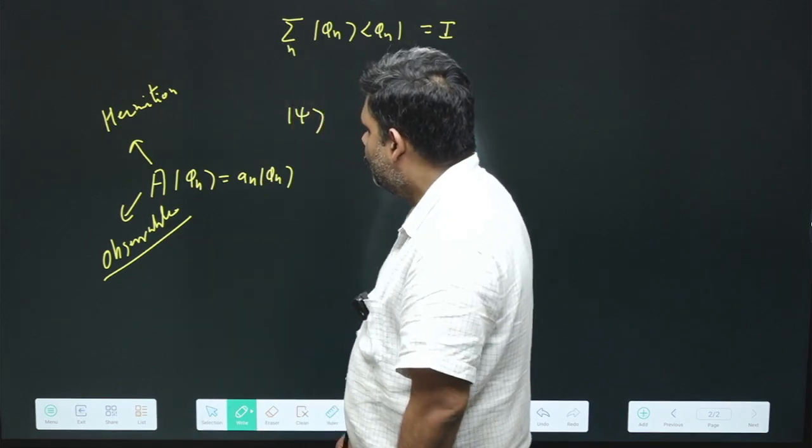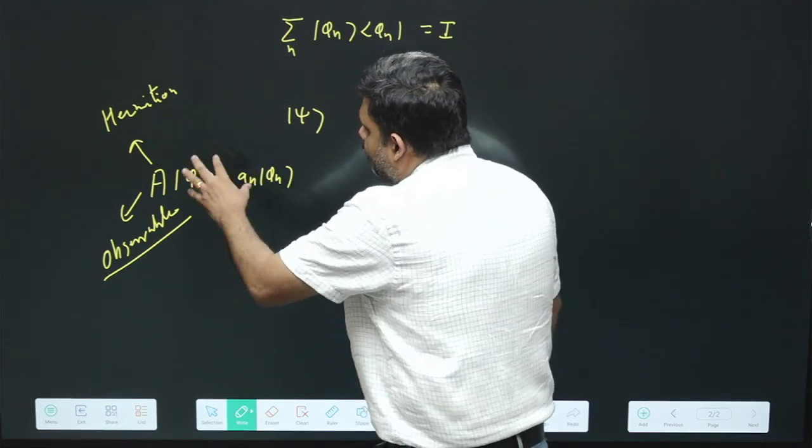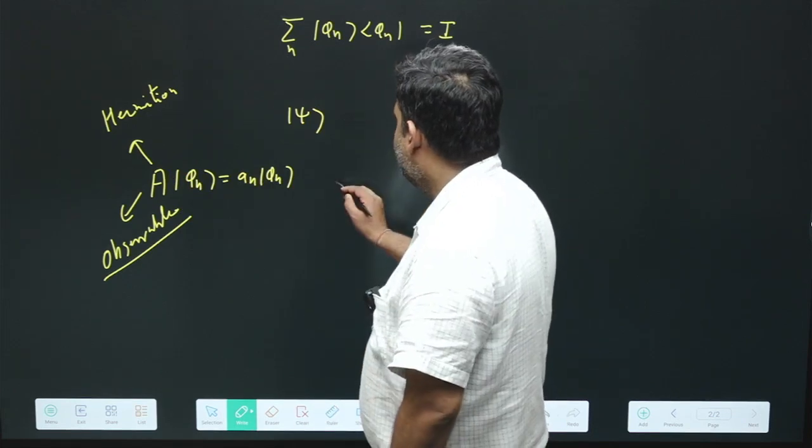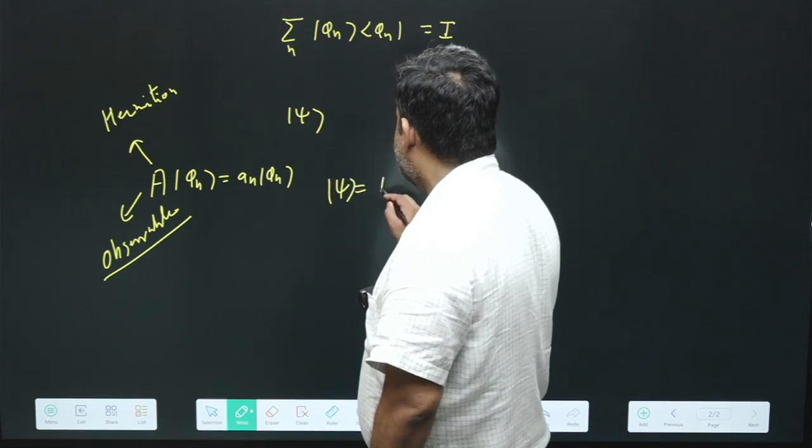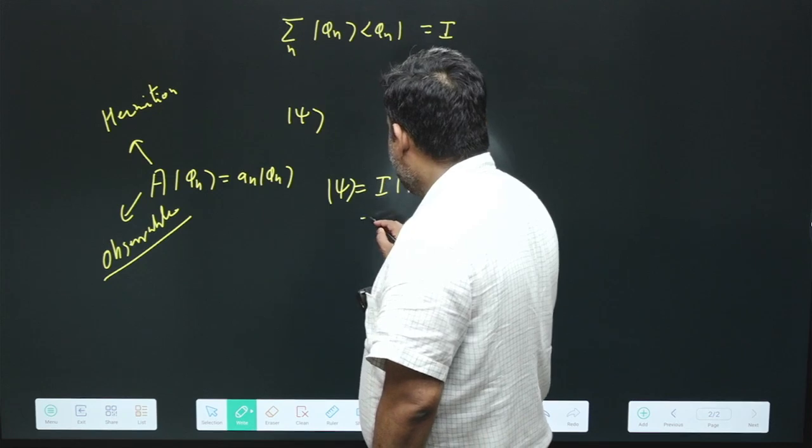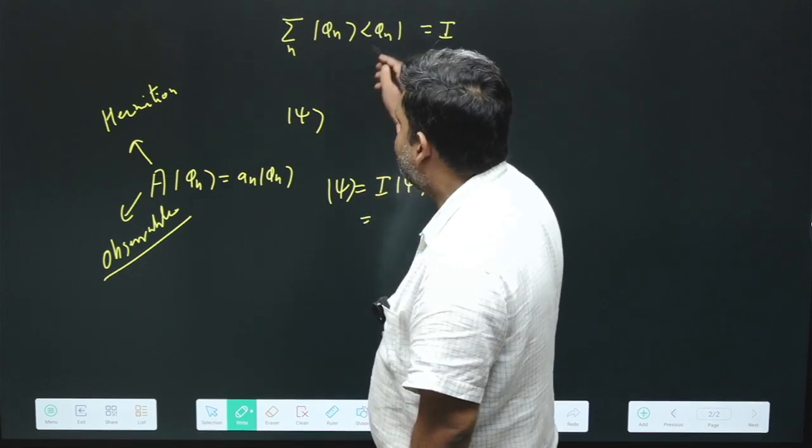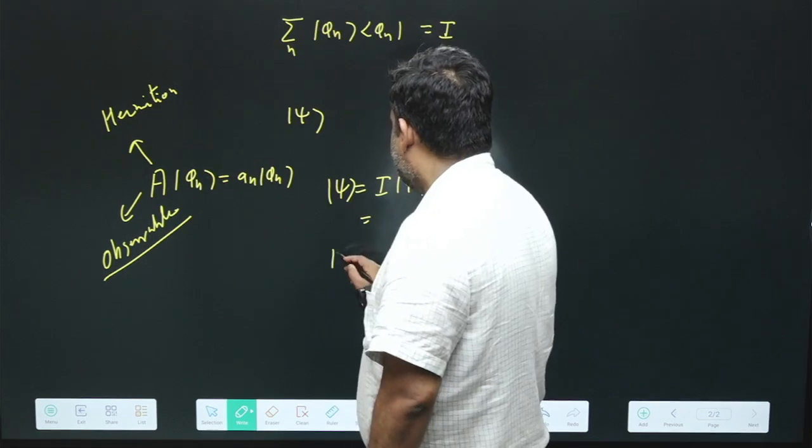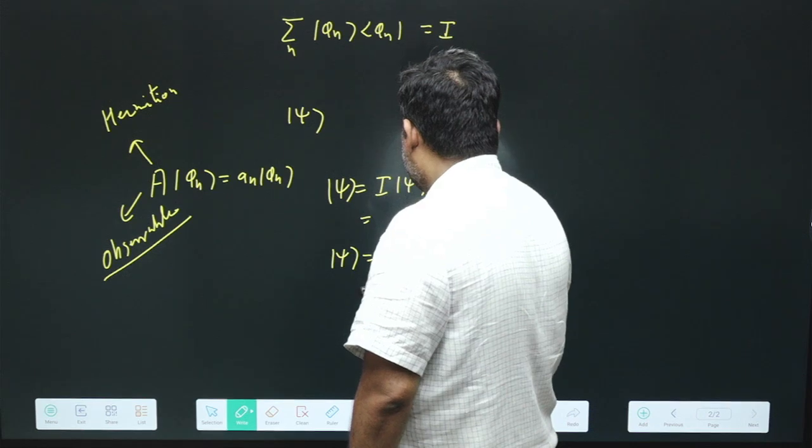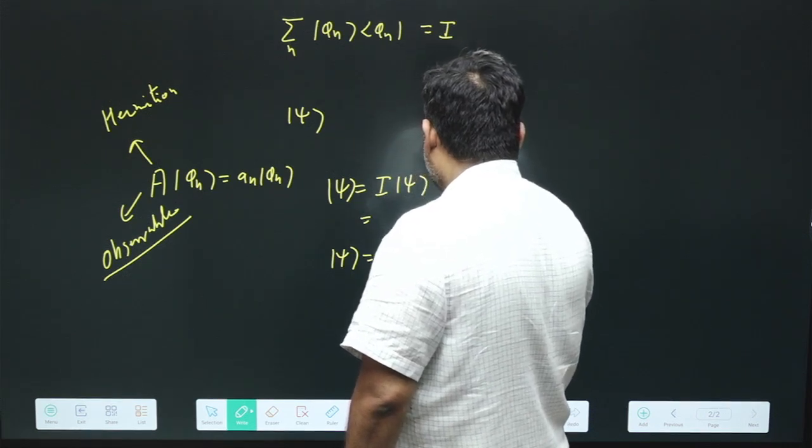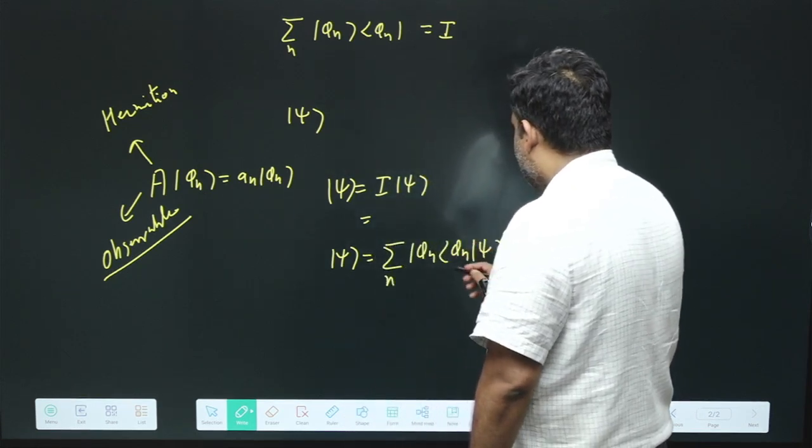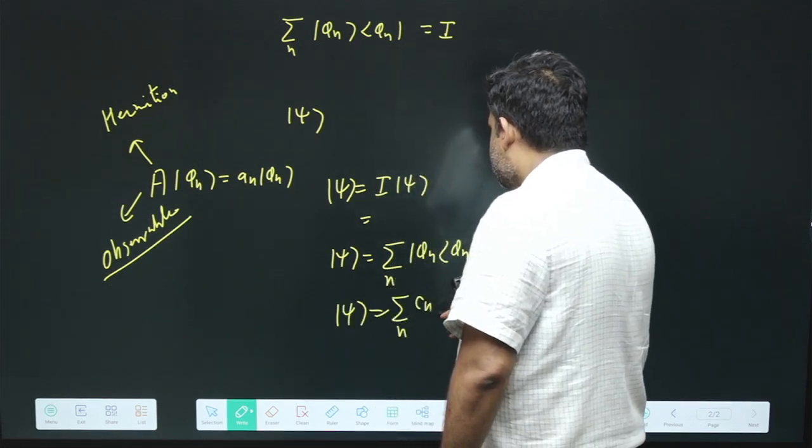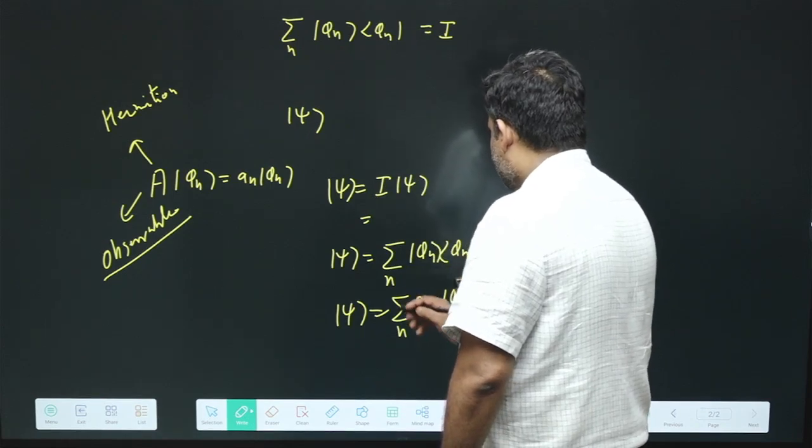So it is associated to some observable and what we want, we want to extract the information about this observable from this state psi. So what we will do? We will just write this psi and I will write the completeness relation with the help of eigenstate. So I can write psi is equal to summation over phi n phi n psi. And what will happen? This phi n psi is some scalar number. And we have psi is equal to summation over n, cn phi n. So what we have done?